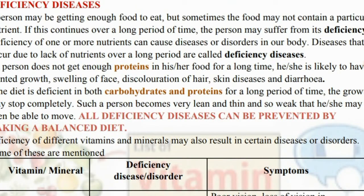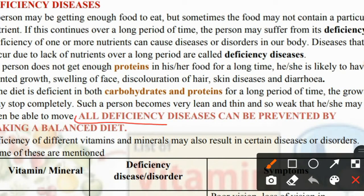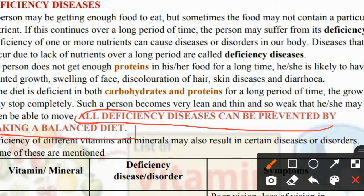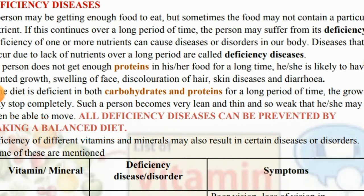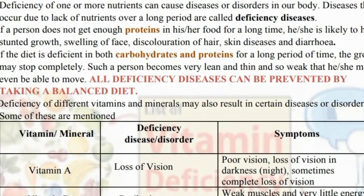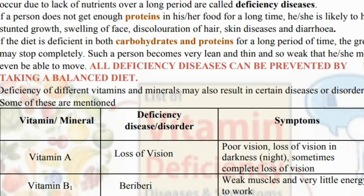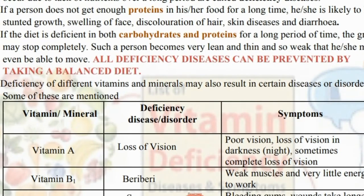All deficiency diseases can be prevented by taking a balanced diet. We have studied in the last worksheet that a balanced diet is one in which all nutrients are present in the proper amount. So if we take a balanced diet, we will not have any deficiency disease.